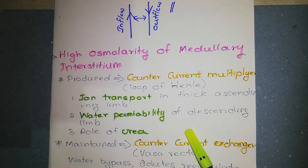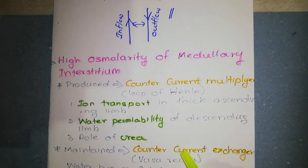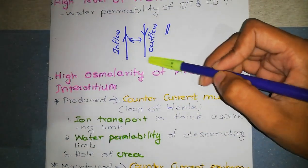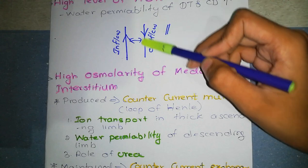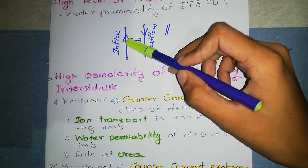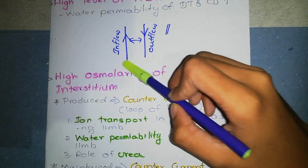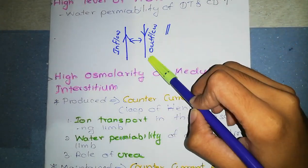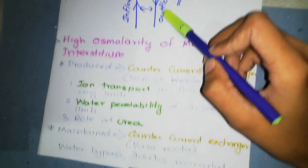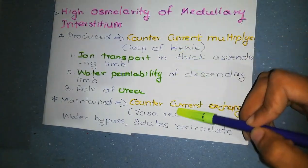What is a counter current mechanism? The counter current mechanism is a system where the inflow and outflow run in close proximity, are parallel to each other, and run in opposite directions. We can see such systems in vasa recta and loop of Henle of kidneys.